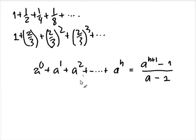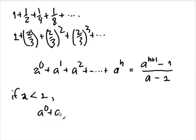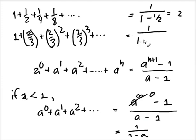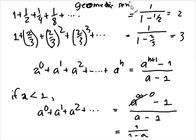For the infinite sum, if a is less than 1, then a^n goes to 0. So the infinite sum equals (0 - 1)/(a - 1), which is 1/(1 - a). For our example with a = 1/2, this equals 1/(1 - 1/2) = 2. And for a = 2/3, it equals 1/(1 - 2/3) = 3. That's the geometric series formula.